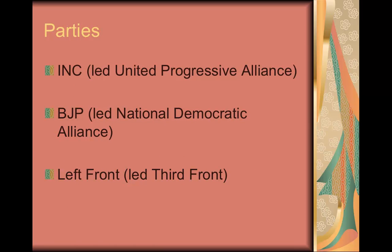In terms of parties, there are six national parties — those recognized in more than four states. These include the Indian National Congress (INC), the Bharatiya Janata Party (BJP), the Bahujan Samaj Party (BSP), the Communist Party of India (CPM Marxist), the Nationalist Congress Party (NCP), and the Communist Party of India. In the most recent elections, you've seen a series of alliances, which has made this a bit simpler. The INC led the United Progressive Alliance and gained 206 seats.